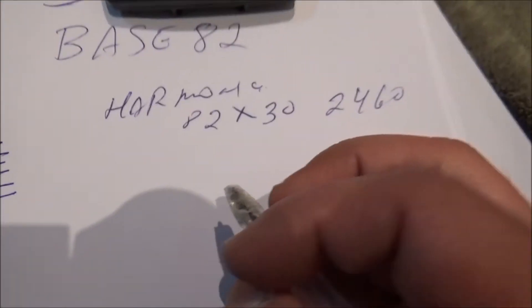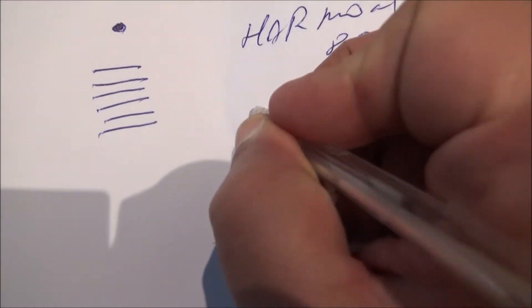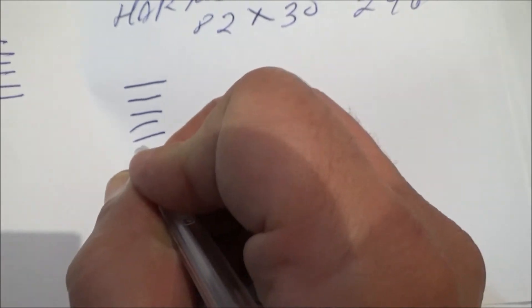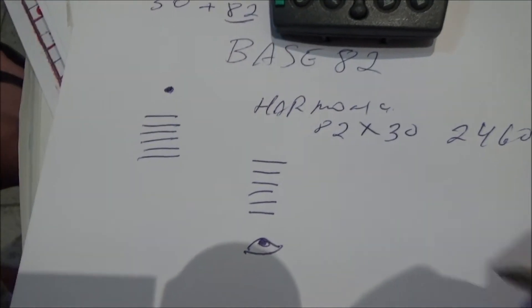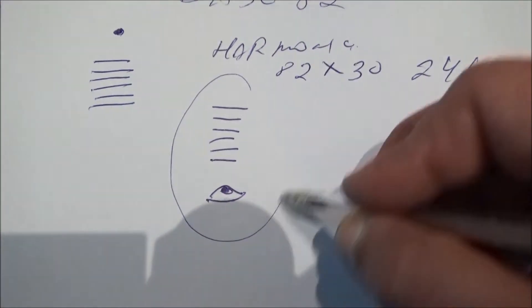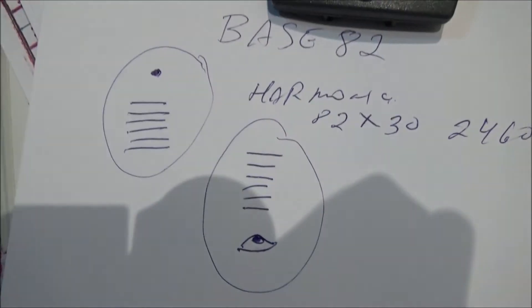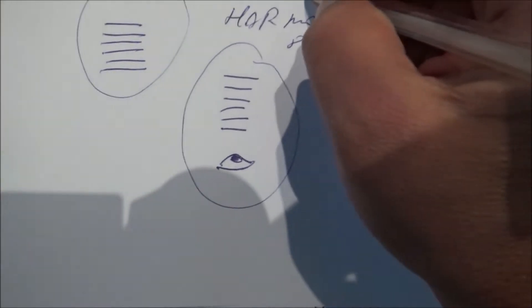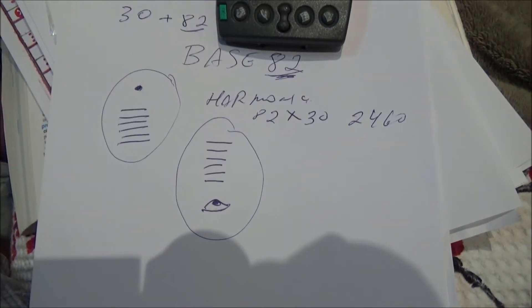This number in base 82 — base edit 2 — it will be 4, 6, 0. So we have: Harmonic, False Harmonic, and base edit 2. Thank you.